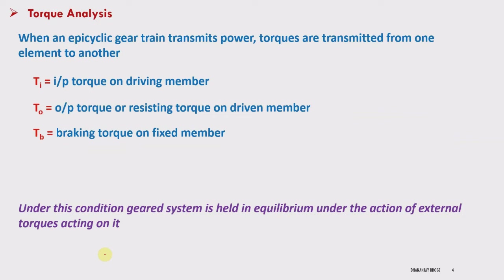Take Ti as the input torque on the driving member, To as the output torque on the driven member — that is the resisting torque acting on the driven member. So To is the resisting torque on the driven member. And Tb is the braking torque on the fixed member.